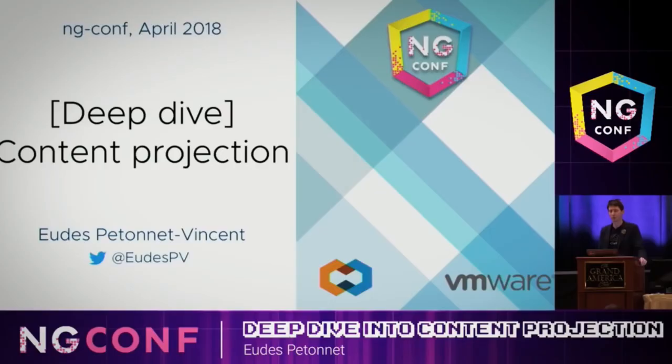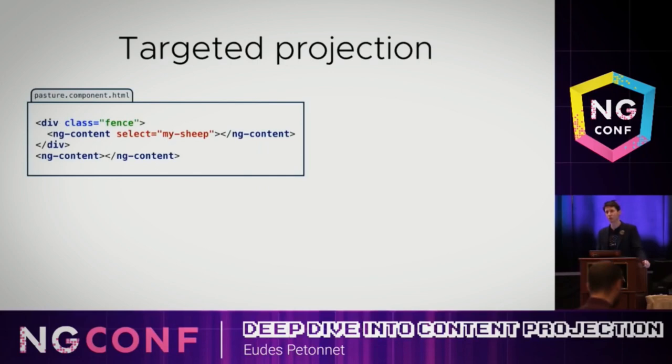If you've ever tried to write a reusable component, whether it's for your own application or as part of a library, you probably have to project content. That's targeted projection. ng-content offers a select attribute that can take any CSS selector. Here I'm using an element selector for my sheep. It could be a class selector with dot-something, or an attribute selector with brackets — anything you want.